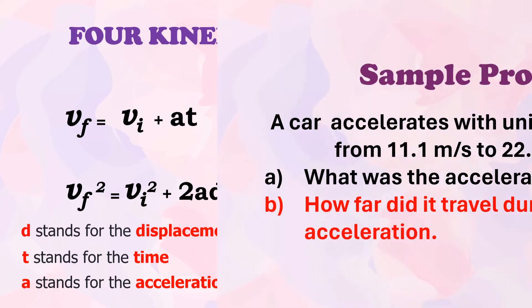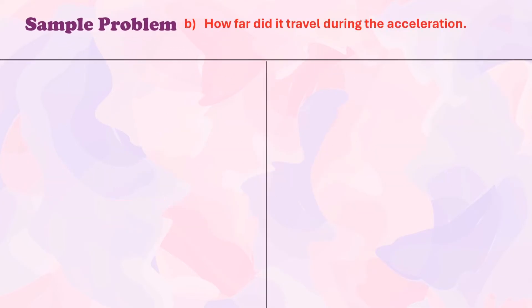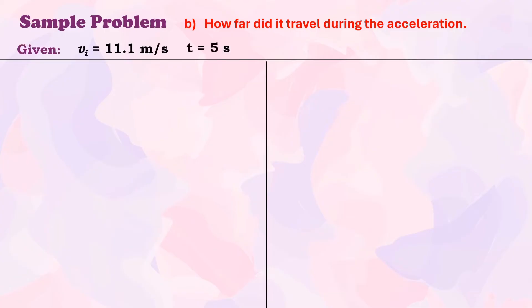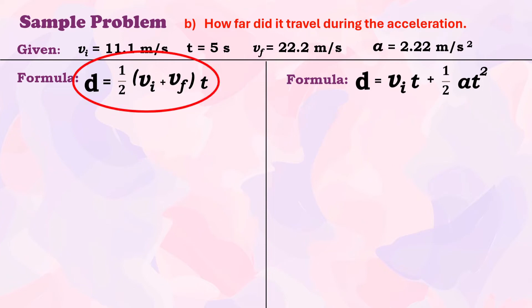Let us go back to the problem presented earlier and calculate the displacement using two kinematic formulas. The given values are: initial velocity = 11.1 m/s, time = 5 s, final velocity = 22.2 m/s, and acceleration = 2.22 m/s². First, let us use the formula: displacement = ½ × (initial velocity + final velocity) × time.